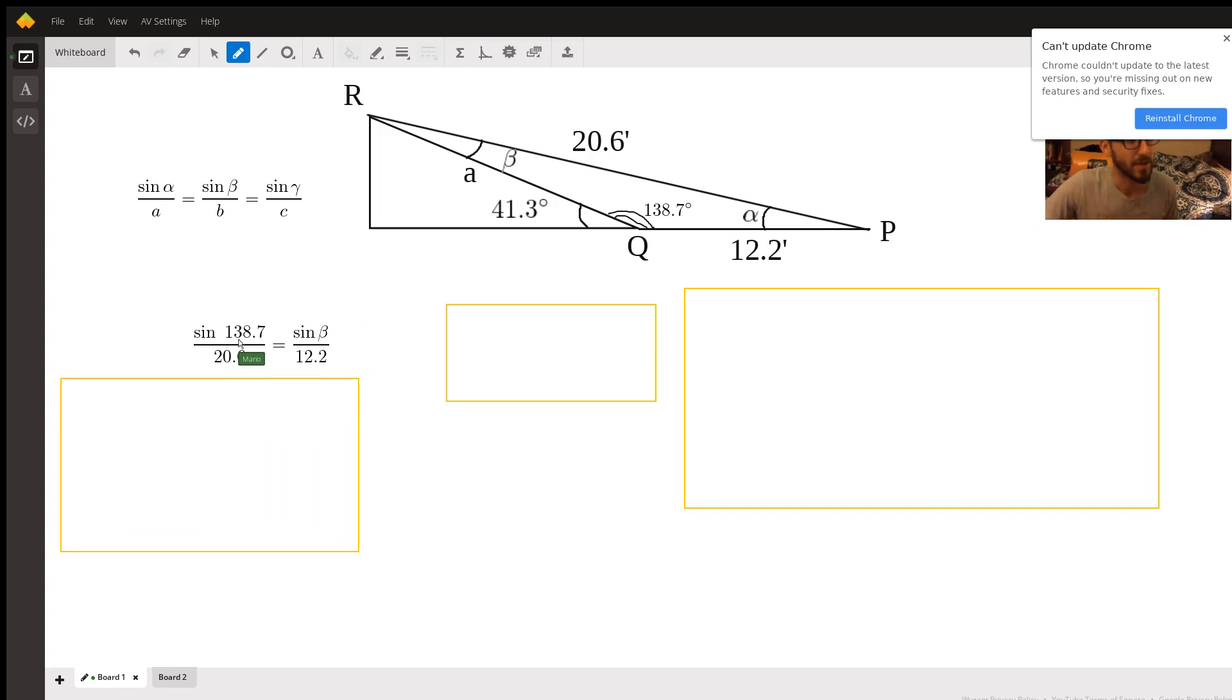All right, I have the angle 138.7, the measure of the side opposite that, unknown angle beta, and the measure of the length of the side opposite that. We're going to go through and solve for beta here. So I multiply both sides by 12.2, moving that to the other side. To get at the angle beta, we're going to need to take the inverse sine of both sides, which we've gone ahead and done here.